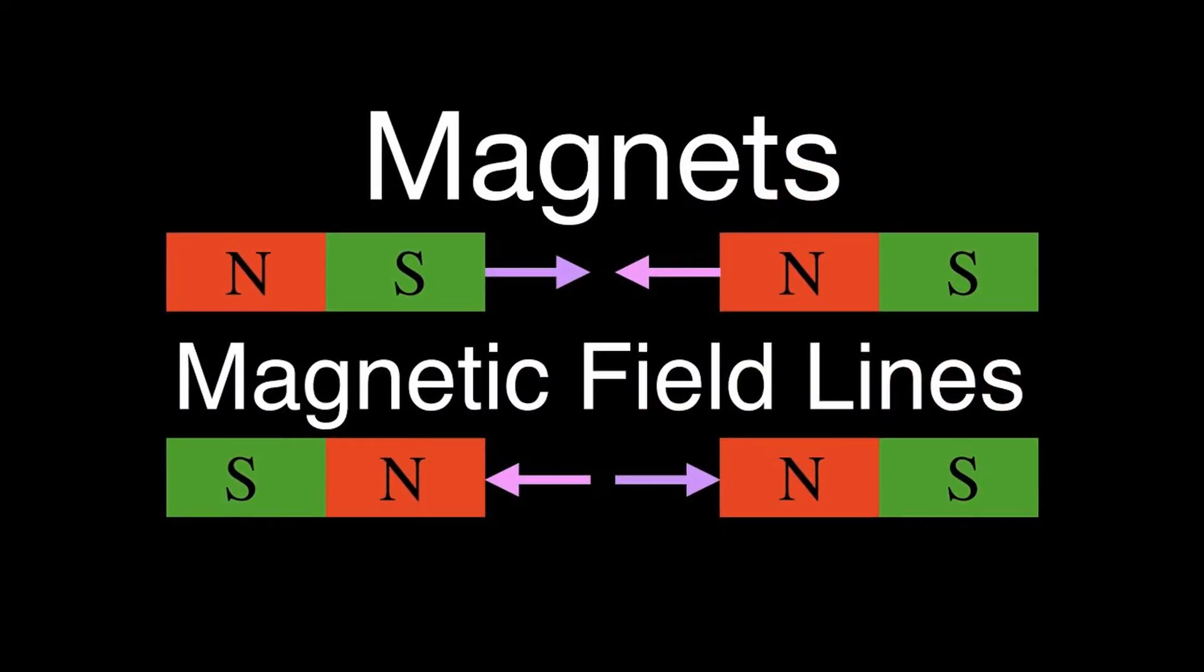The space around a magnet in which any other magnet or certain metals experience a force is called a magnetic field.